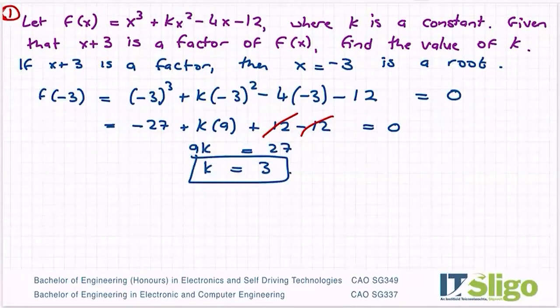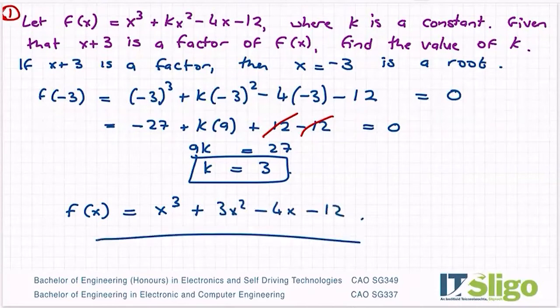What was the question? Find the value of k. So in other words, my expression would be x³ + 3x² - 4x - 12. Don't forget to sub your k back in if there's a part b, c, d, etc. to the question.